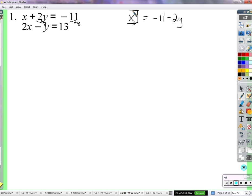Now we know that x is the same as negative 11 minus 2y. They are exactly the same. Just like bathroom and restroom are interchangeable, now we know that x and negative 11 minus 2y are interchangeable, substitutable. So 2 times negative 11 minus 2y minus y equals 13. We replace x with something that's exactly the same as x.